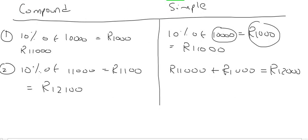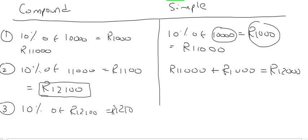Can you see the difference going into year three? Compound interest says but Jessica now has twelve thousand one hundred so we need to give it what, ten percent of twelve thousand one hundred, which is a thousand two hundred and ten Rand, which means that she now has thirteen thousand three hundred and ten Rand.